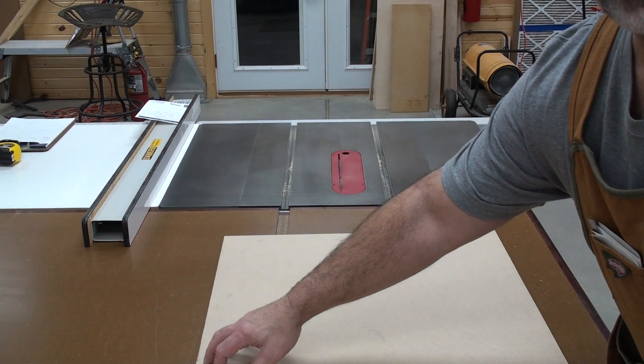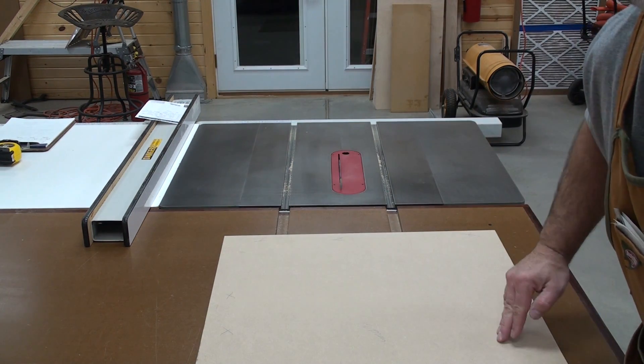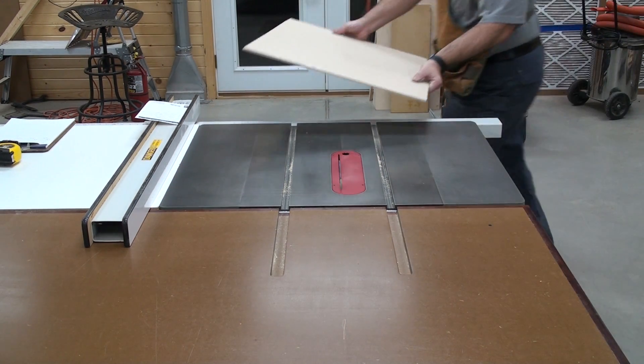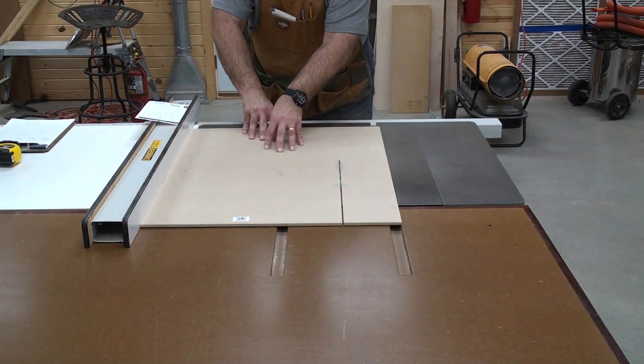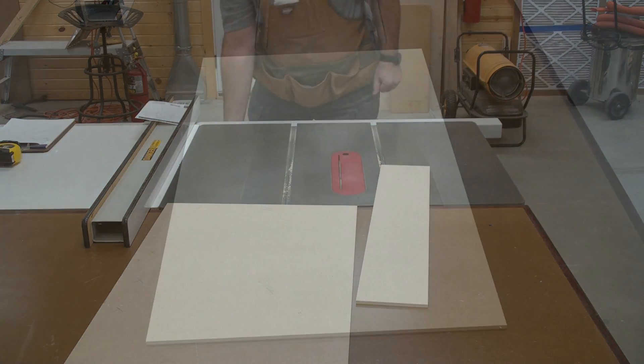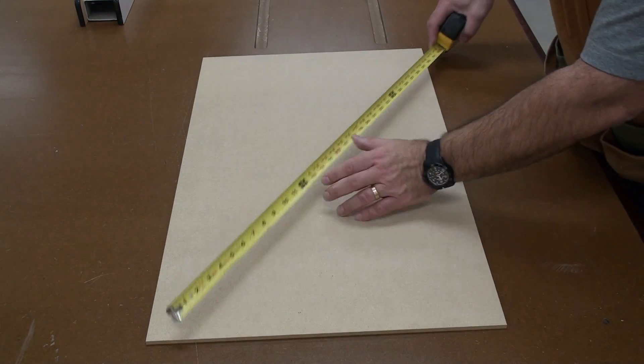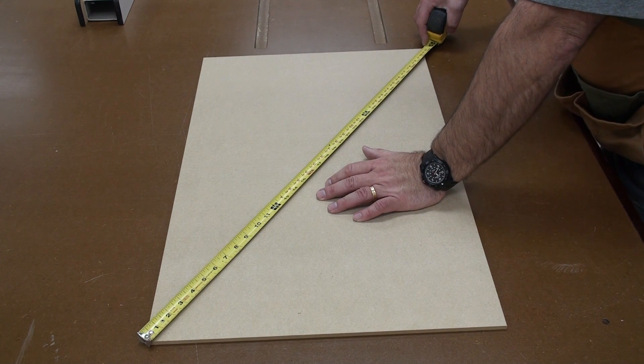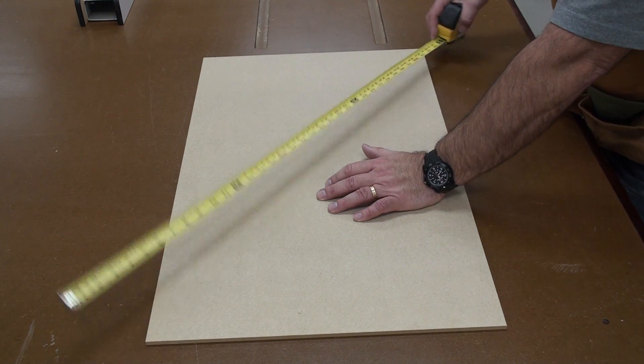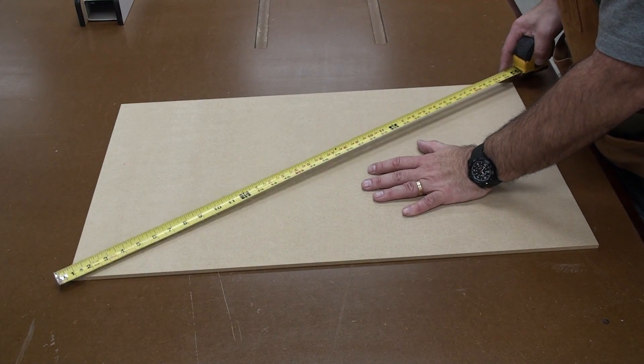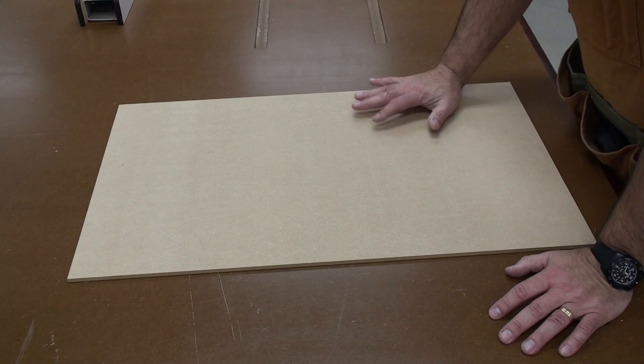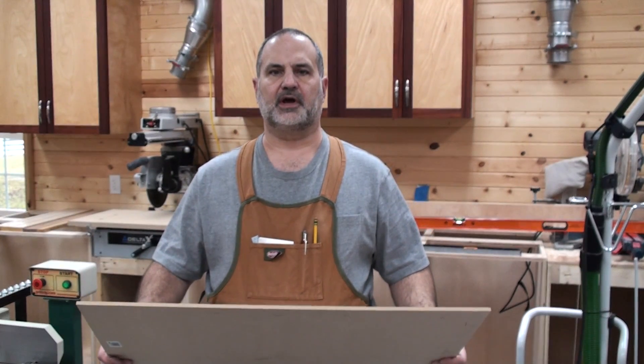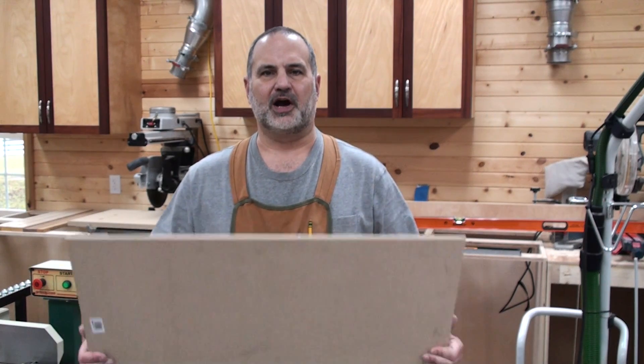Now I'm going to put what I call my gripper edge against the fence and cut off this side. Now that I've cut the sheet to size, I am going to measure one corner to one corner. And I am 35 and an eighth on this corner. Spin it around. And I am 35 and an eighth on the other corner. So I guarantee you this is now perfectly square.